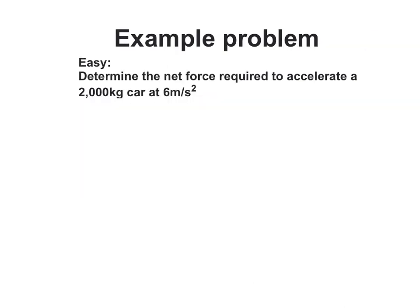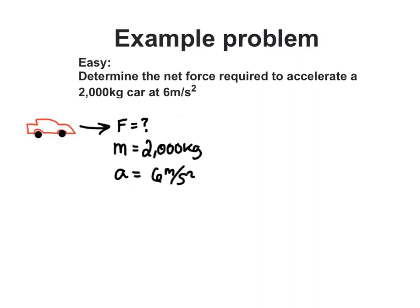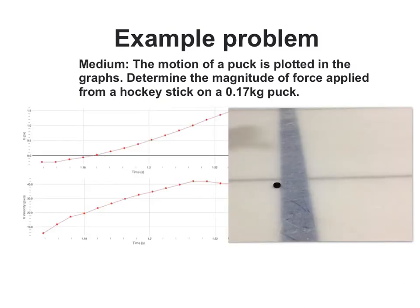Let's try a simple example. Determine the net force required to accelerate a car at 6 meters per second squared. This problem is about as easy as they come. You've got two out of the three variables. F net equals m times a. Plug in your values and you're done.